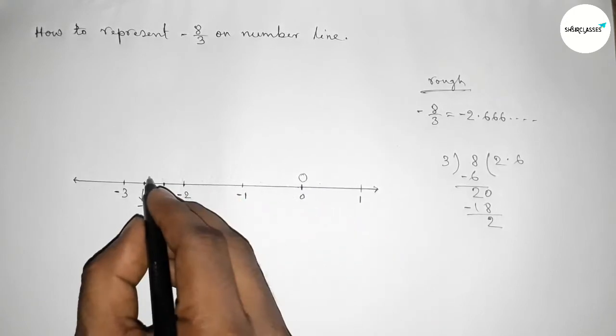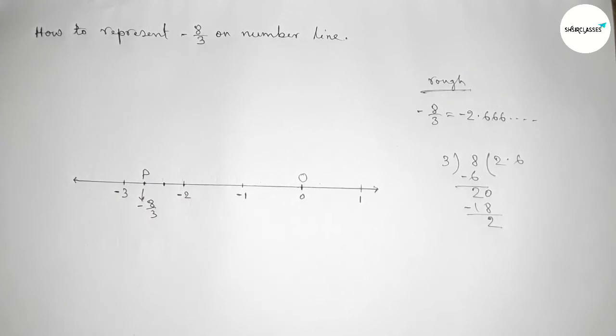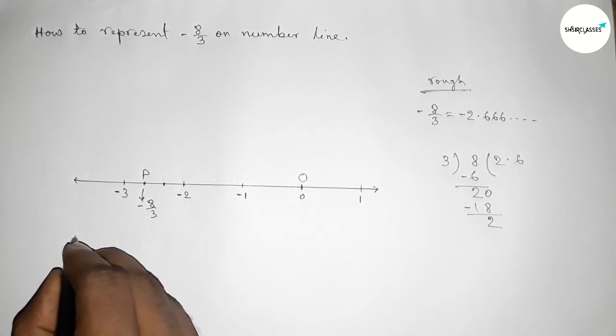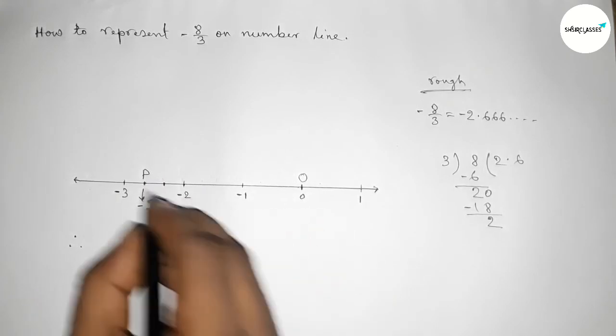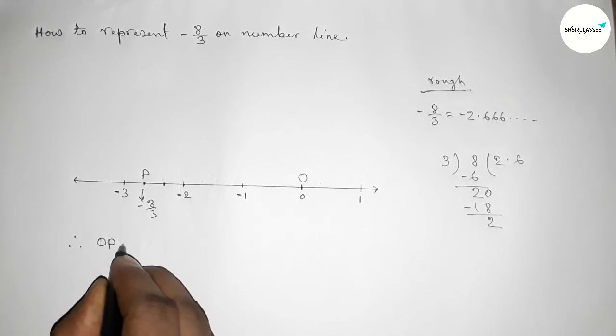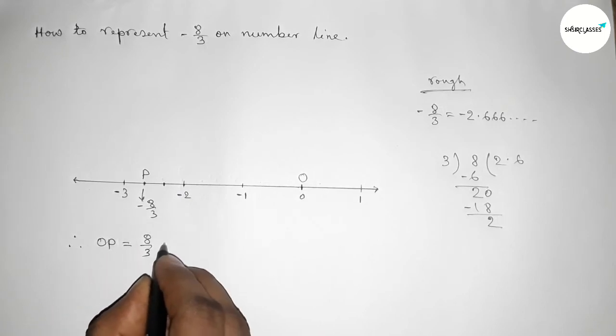Now taking here a point O and here P, so therefore the length OP equals to eight by three unit since length is always positive.